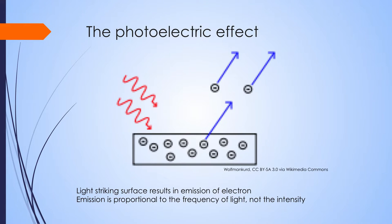Later, people did an experiment where they were shining light on a metallic surface and noticed that light striking the surface resulted in emission of electrons. If you were to think of light as a wave, you would expect that as you increase the intensity of the light you would get more emission of electrons, and decreasing intensity would give less — a relatively smooth curve. But what was found is that intensity didn't matter as much as the frequency of the light. Once you went below a certain frequency of light, you had no emission at all. So people had to begin thinking of light also as a particle.